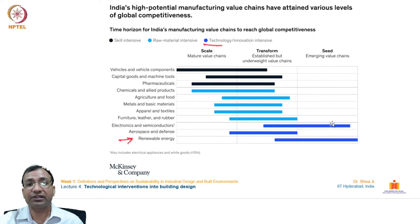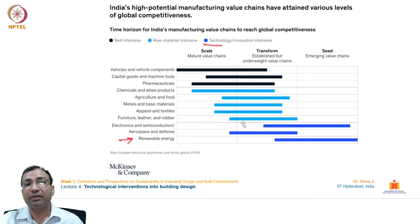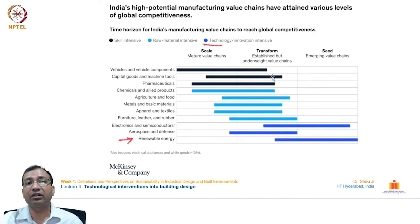In electronics and semiconductors, India has grown very fast with rapid growth in computing power, laptops, and other computing capabilities. A number of facilities are coming up in India for producing semiconductor devices and processing chips. In conventional manufacturing areas like furniture, leather, rubber, apparel, textiles, metal, agriculture, chemicals, and allied products, medium-range growth is registered. In vehicles, capital goods, and pharmaceuticals, India has also registered significant growth.